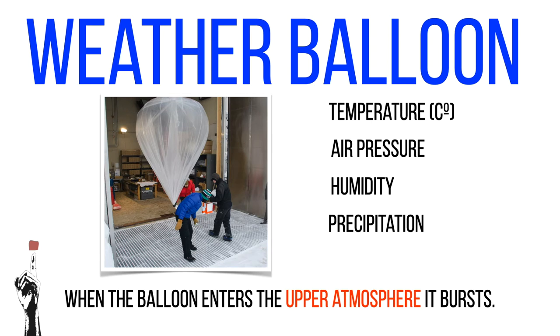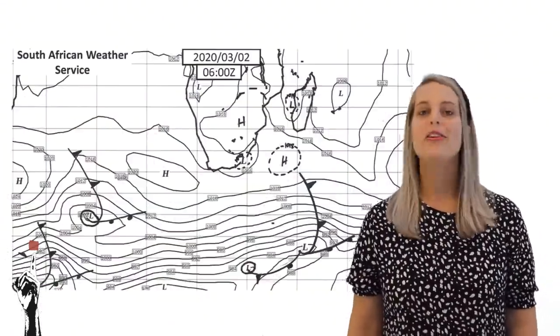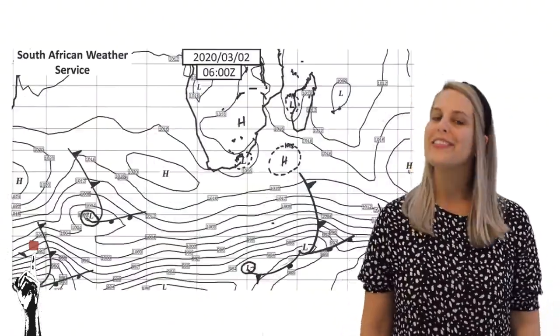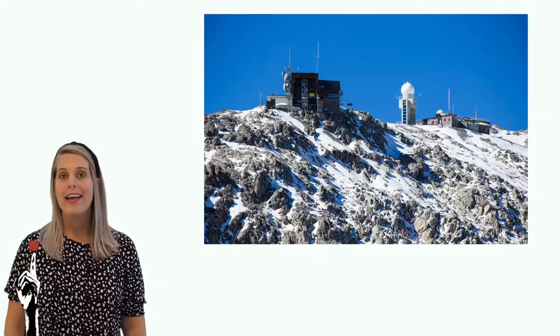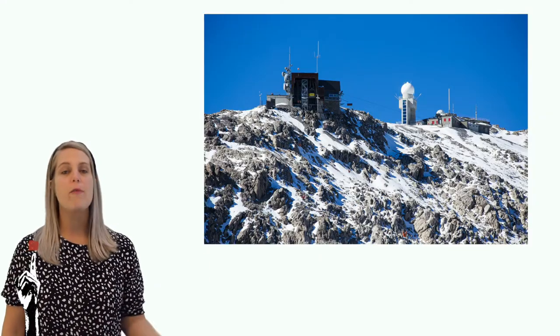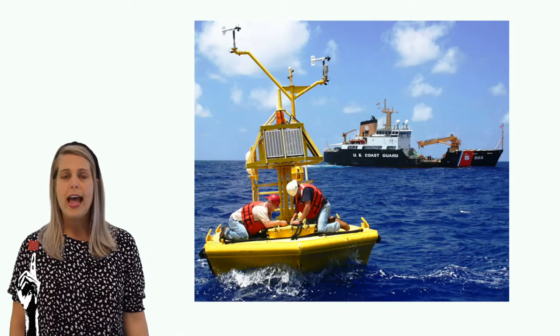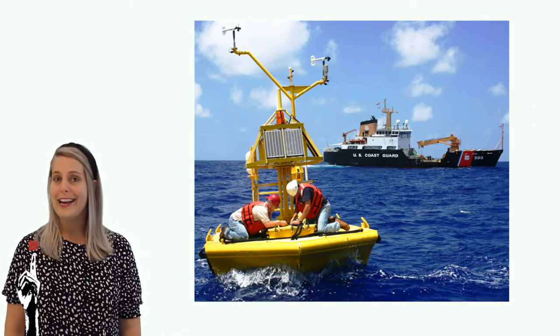When the weather balloons reach the atmosphere they tend to burst. Weather maps or synoptic charts are produced every day in order to assist with weather forecasting. The information is obtained from weather stations all around the world and even sometimes from ships and aircraft. In the case of a ship, a cargo ship or a passenger ship can be embarking on a long journey and meteorologists will often take this opportunity to record the weather as the ship travels.